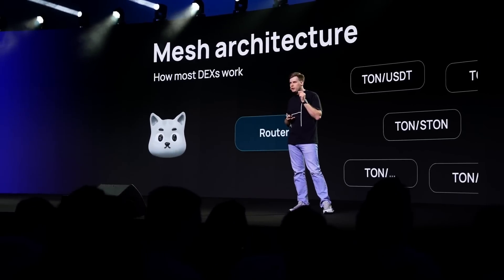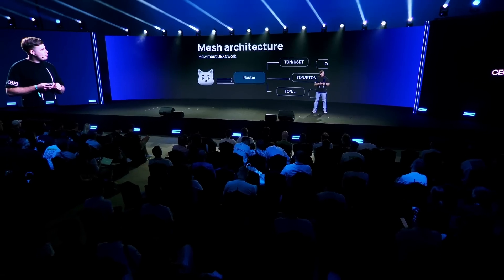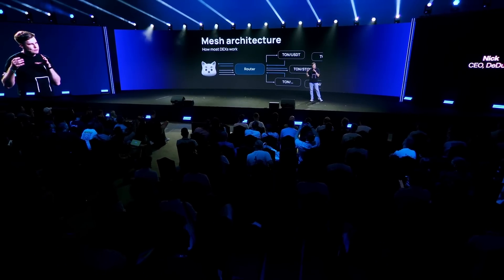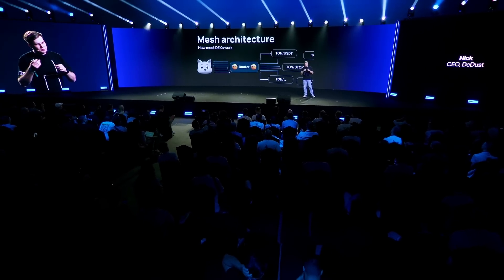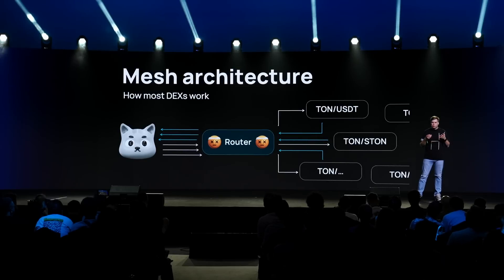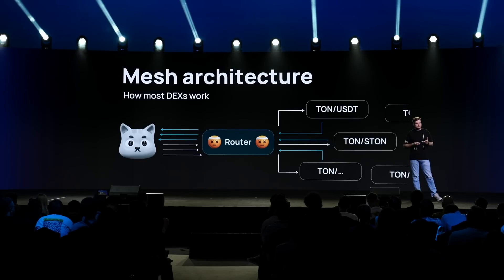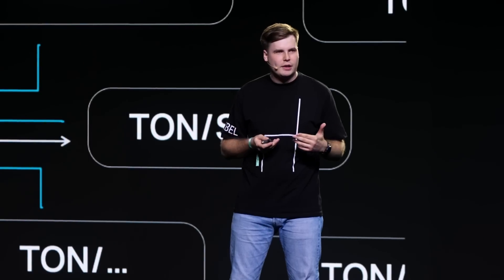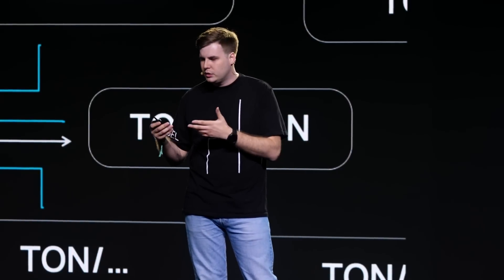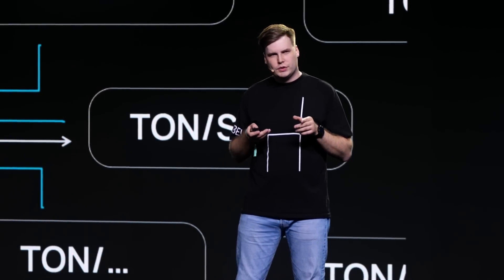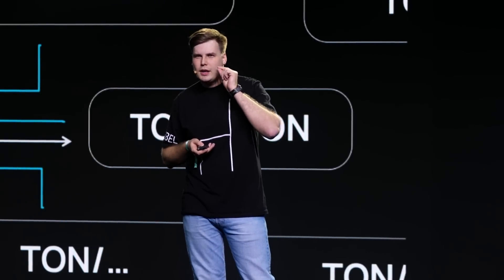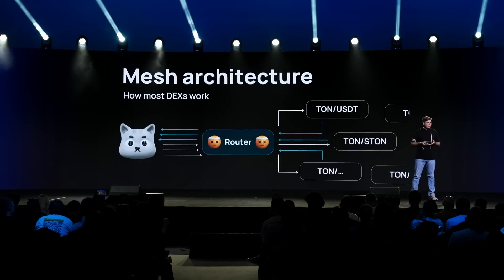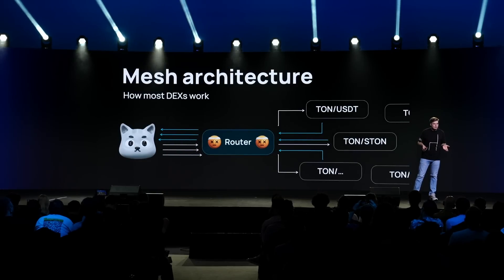Now let's talk about mesh architecture. Most DEXs have a router. This router receives some assets and after a while pays out other assets. This approach is commonly used by other networks. But here's the problem: in TON, this setup becomes a bottleneck. If one token is traded heavily, the router stalls until it processes all the swaps, and every other asset gets stuck. For example, a position in a lending protocol cannot be urgently liquidated because the DEX doesn't work — and this is a problem.